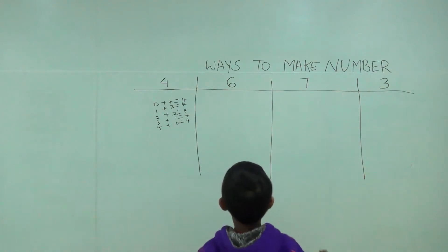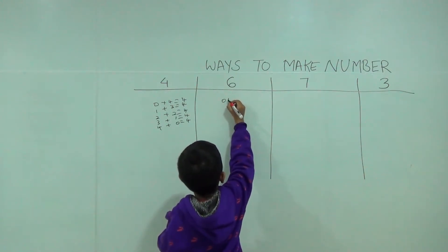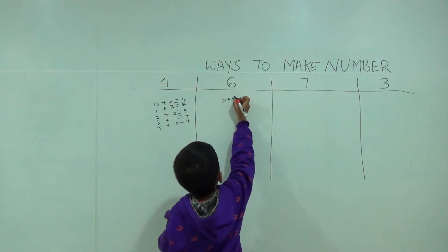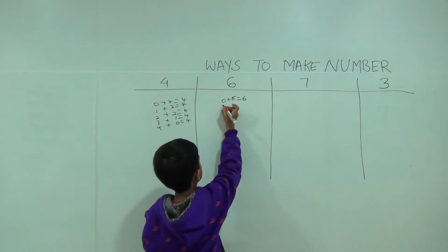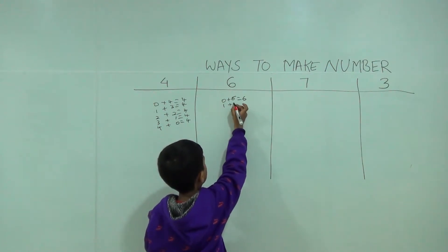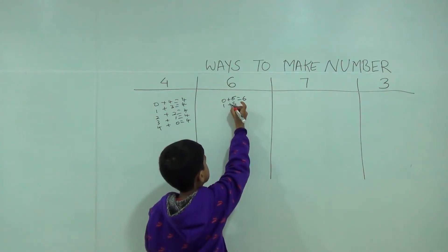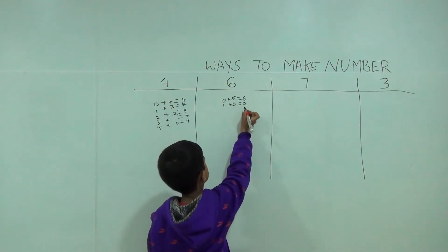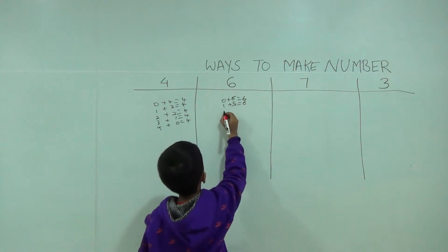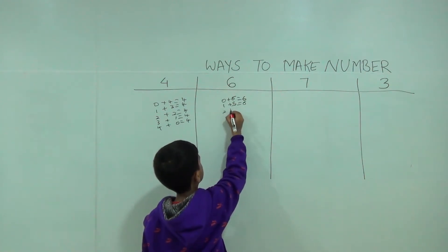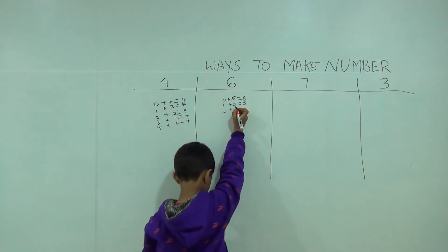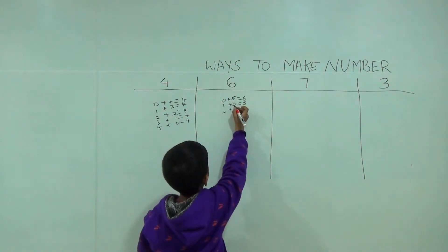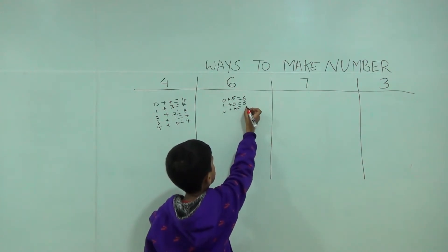Six. Zero plus six is equal to six. One plus five is equal to six. Two plus four is equal to six.